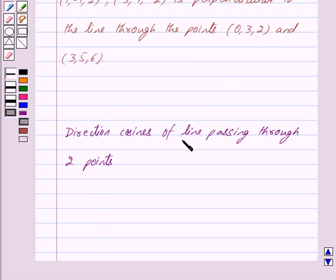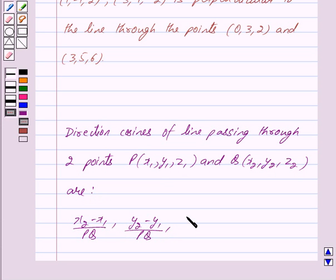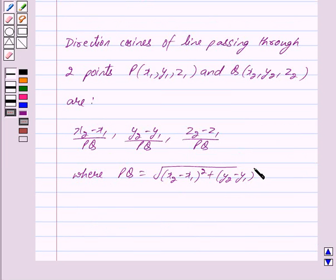The direction cosines of a line passing through two points P with coordinates (x1, y1, z1) and Q with coordinates (x2, y2, z2) are (x2-x1)/PQ, (y2-y1)/PQ, (z2-z1)/PQ, where PQ = √((x2-x1)² + (y2-y1)² + (z2-z1)²).